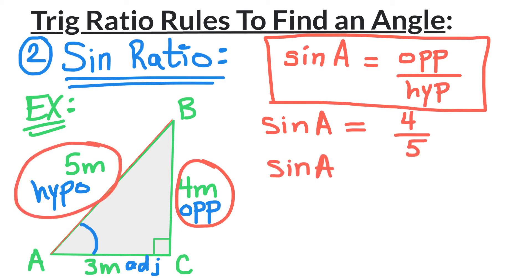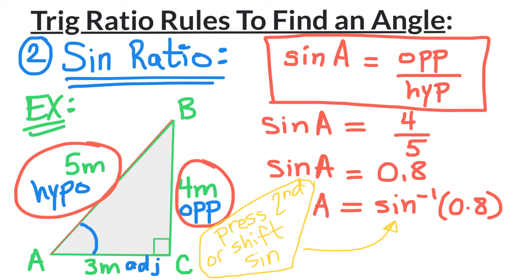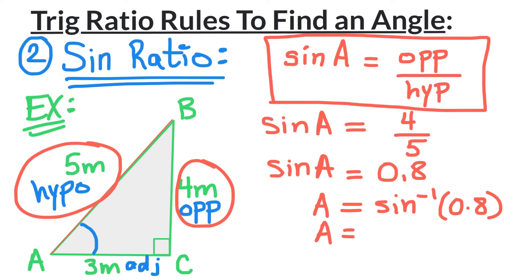4 divided by 5 is 0.8. Now to solve for A, we bring the sine to the other side, which gives sine inverse. Remember to press second or shift then sine to get sine inverse, and then plug in 0.8. You should end up with 53.13 degrees, which is approximately 53 degrees.